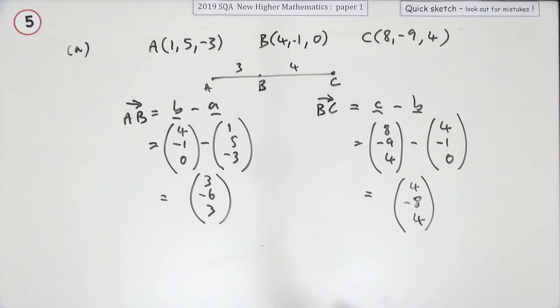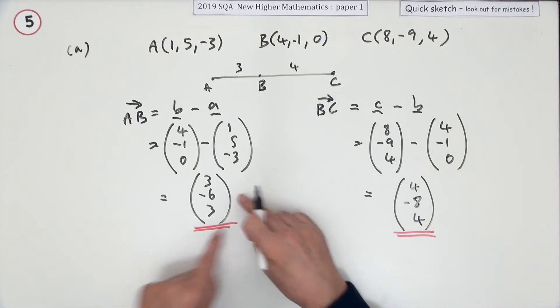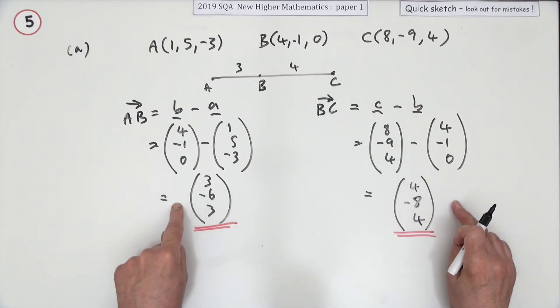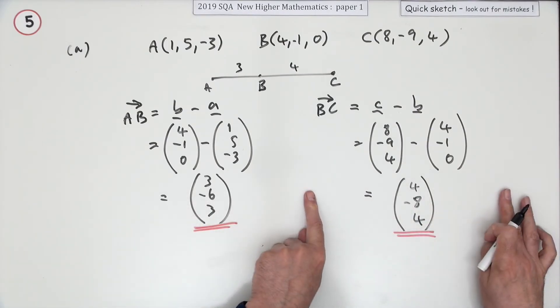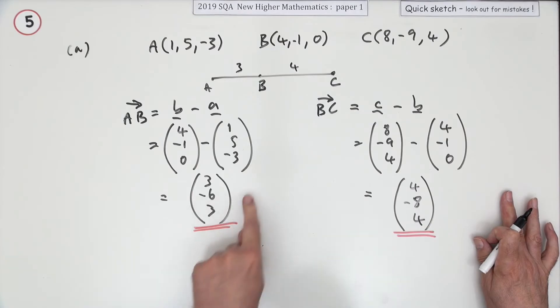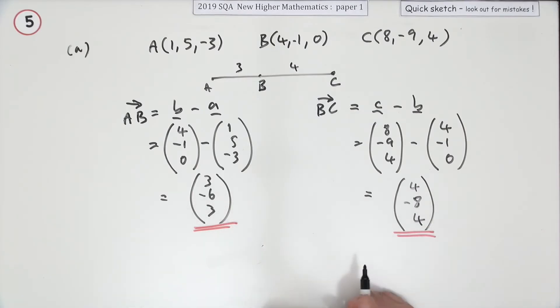Now you've got a couple of options. You can either reduce them by taking out the multiples to the same basic vector - that'll be three of something and four of something - or you could just make the statement, which I'm going to make here, that AB is equal to three-quarters of BC.